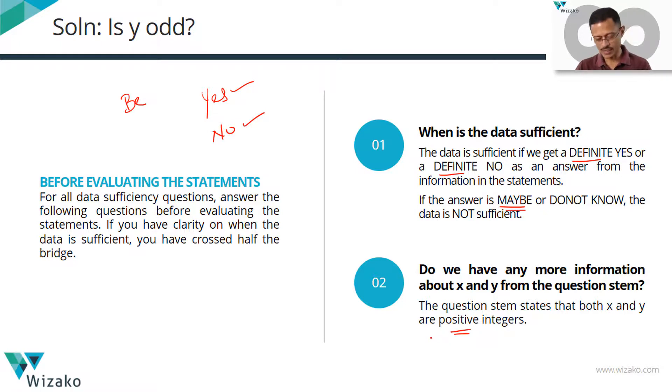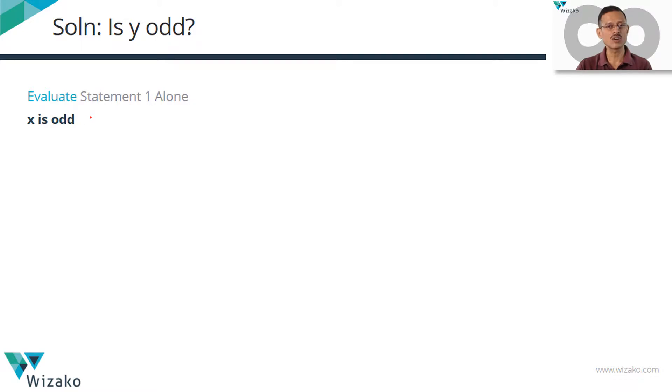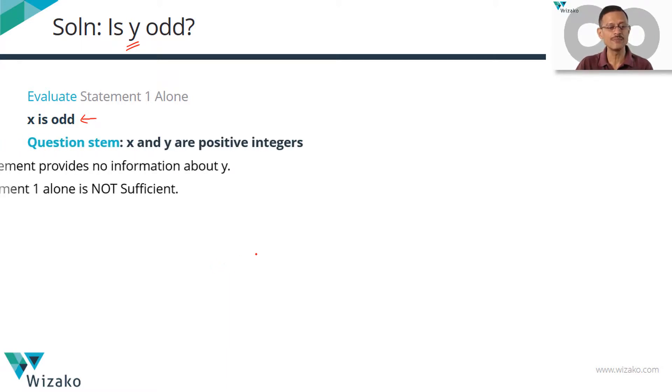Let's start with statement 1. Statement 1 says x is odd. This gives information about x. Nothing is known about y. So obviously, this statement is very easy to eliminate.